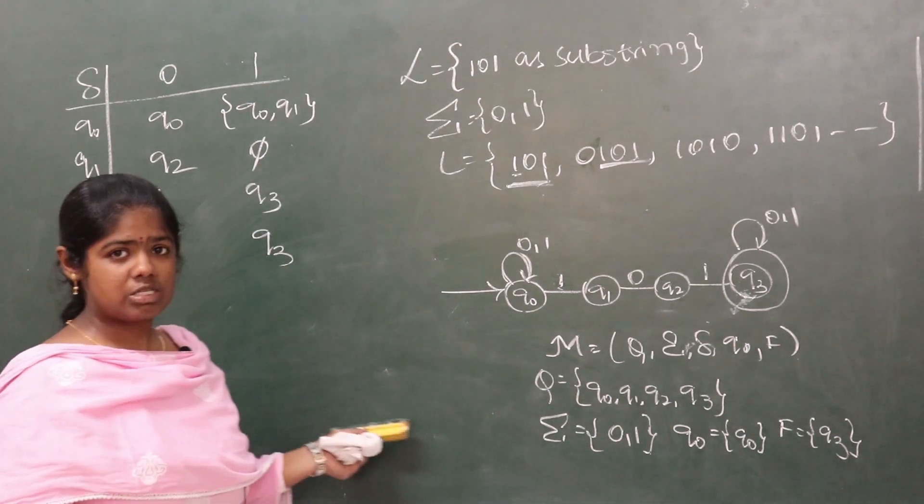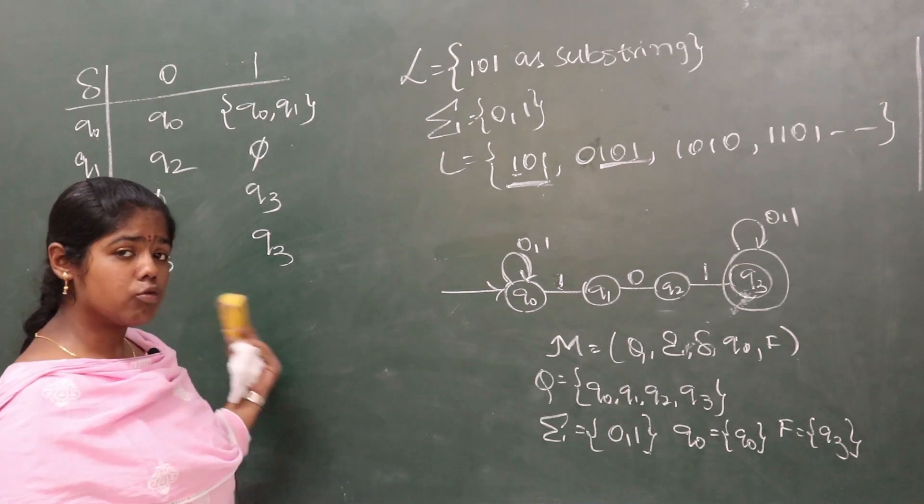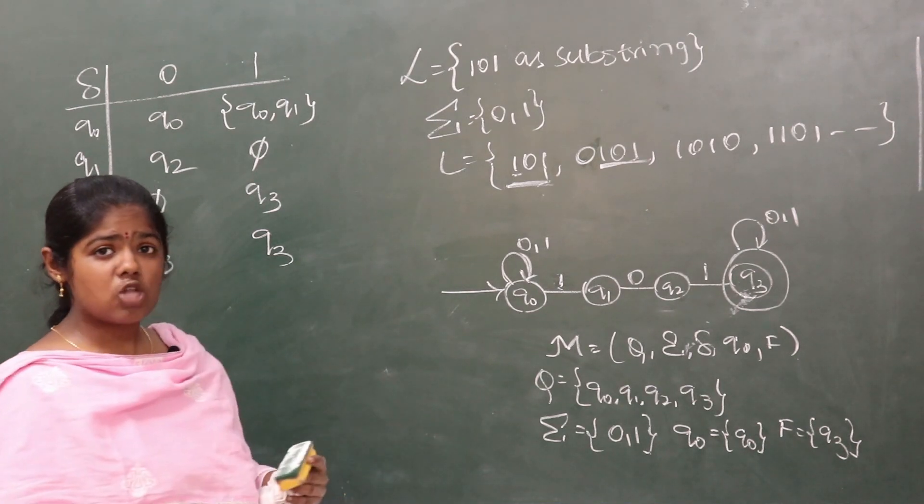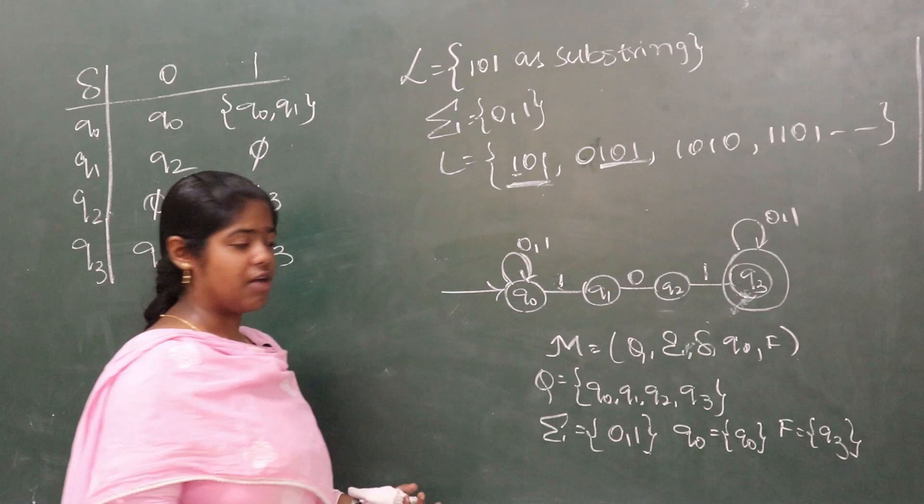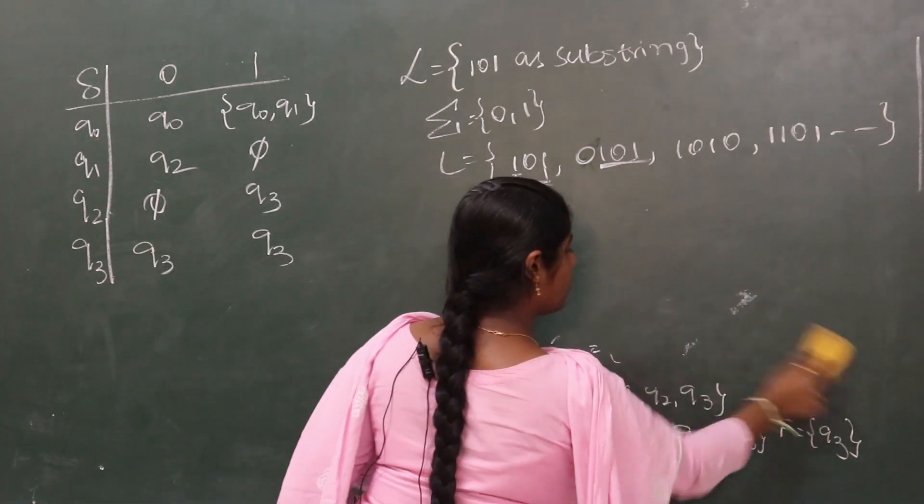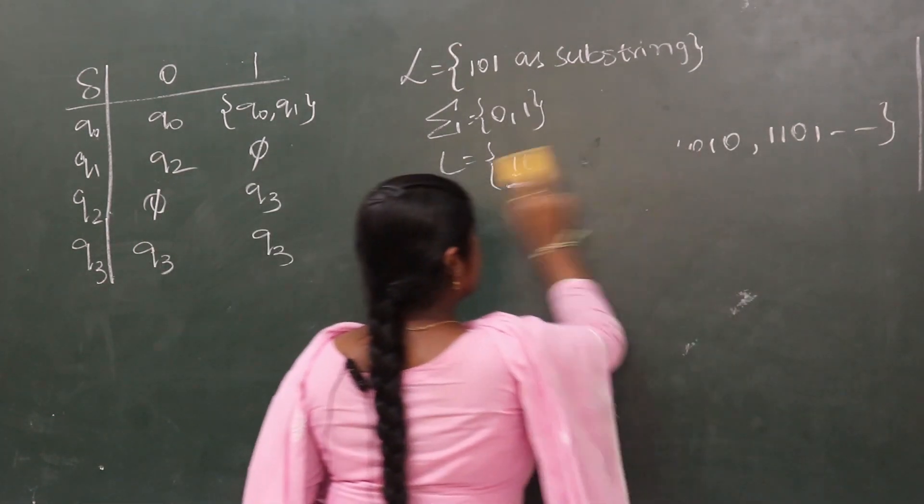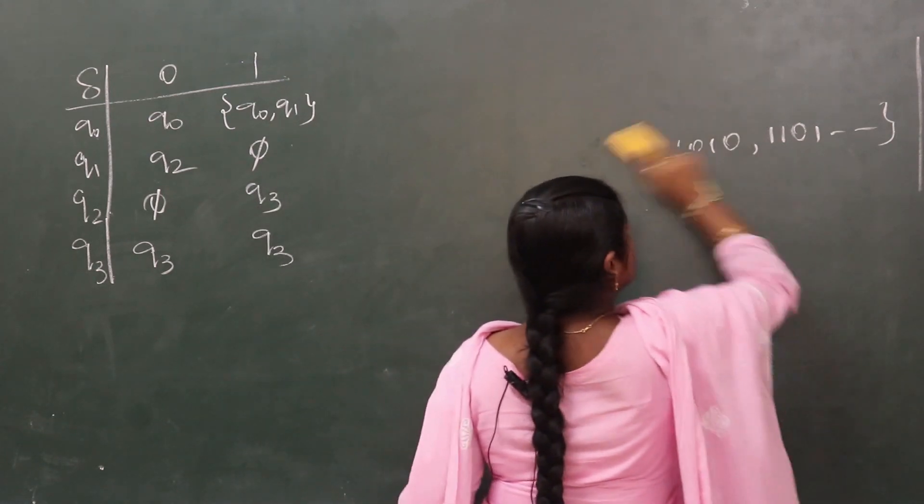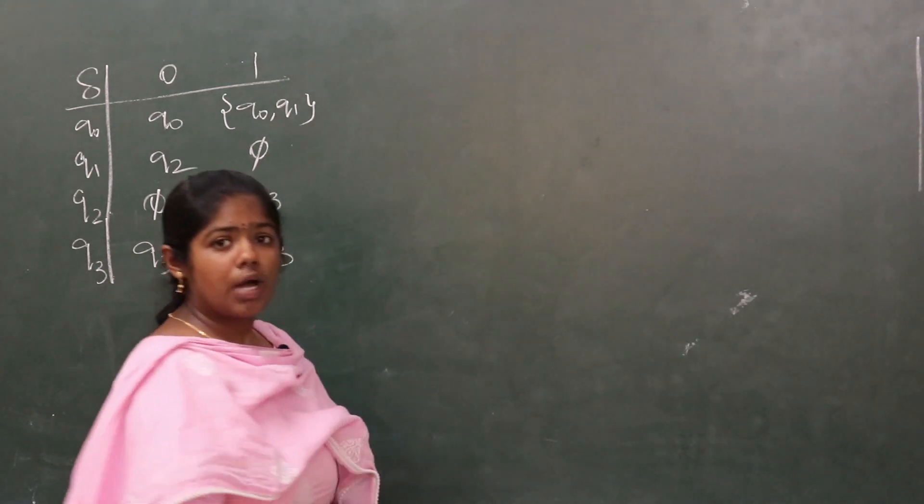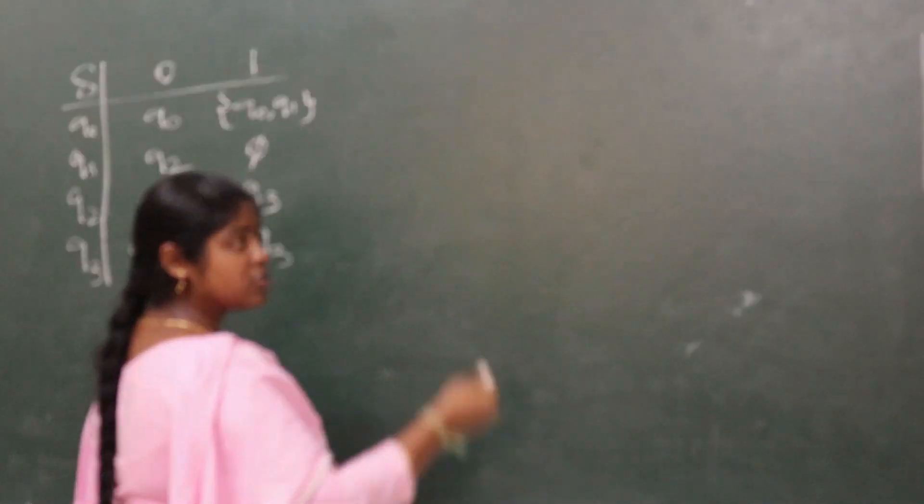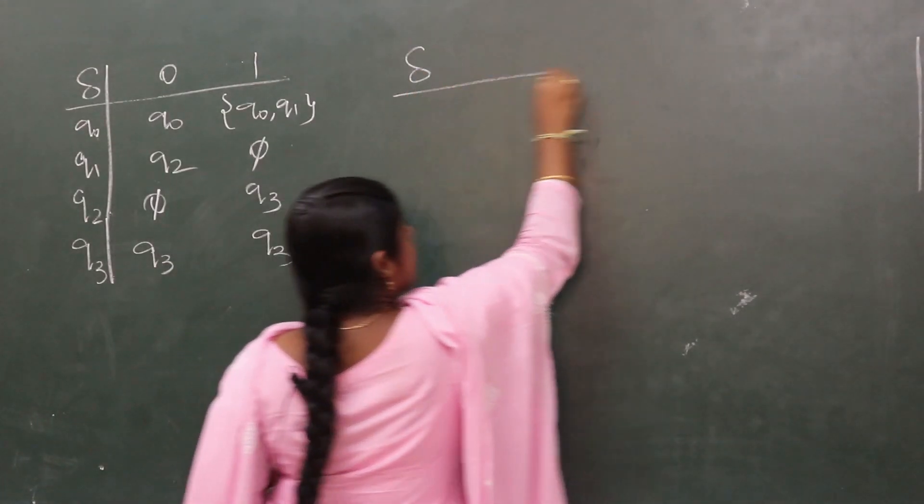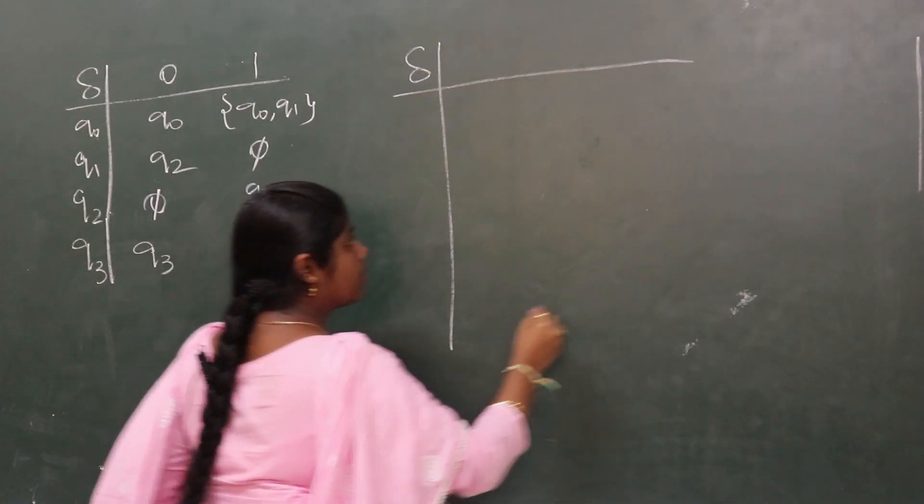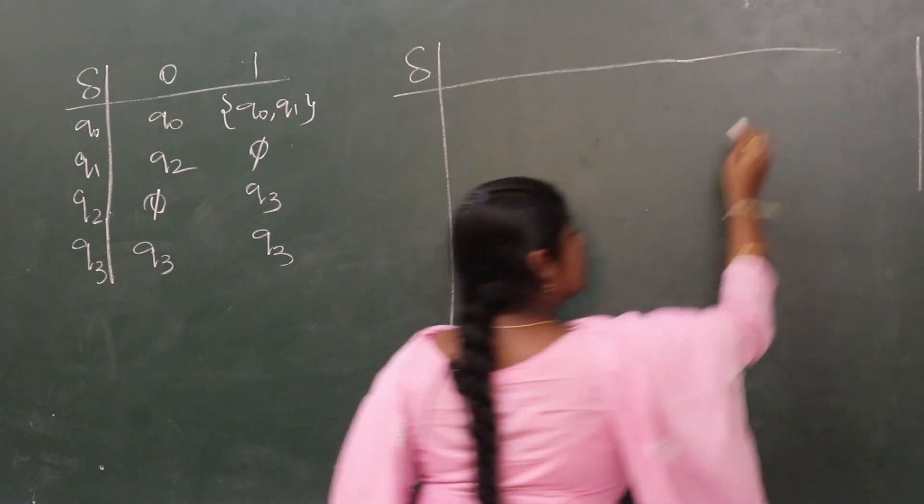This is the non-deterministic finite automata. How to convert this non-deterministic finite automata to DFA? To convert this NFA to DFA,